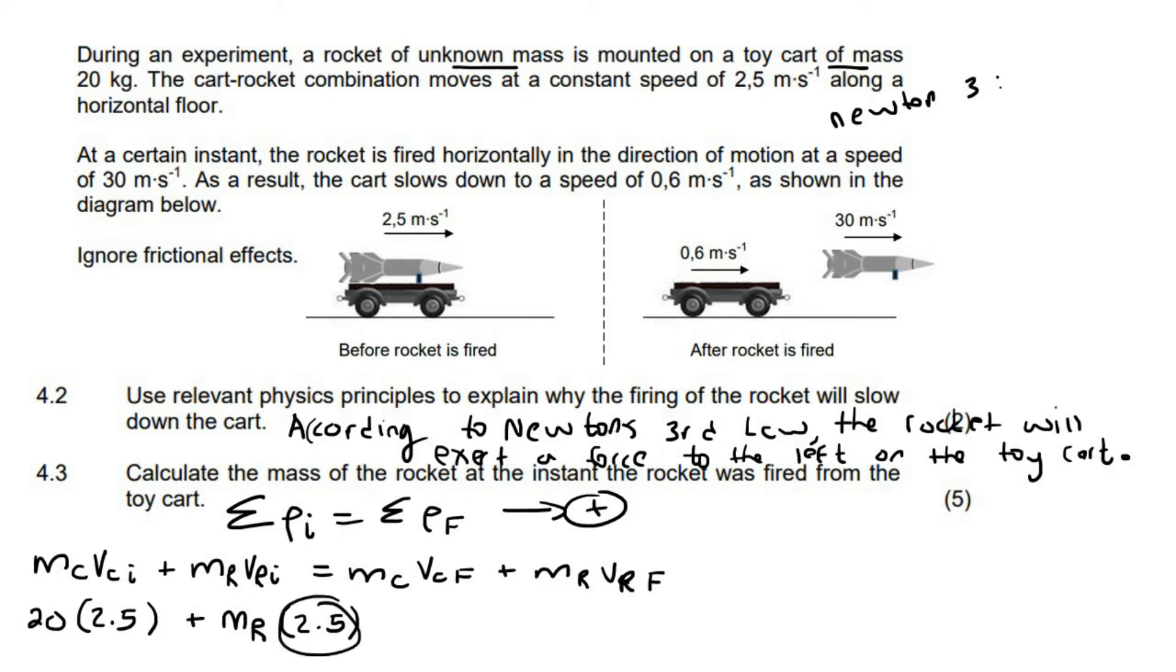You might have wanted to say zero because the rocket is not moving on the cart, but they're not talking about that velocity. They're talking about the velocity. If you were standing and watching this rocket going past on the cart, I know it looks like the rocket is not moving. It's not moving on the cart, but it's still moving relative to the ground. And it's that that they're talking about. They're talking about relative to the ground. So don't put a zero over there. Okay. Then, let's see the mass of the cart is still going to be 20. Its final velocity is 0.6. The mass of the rocket is the unknown and its final velocity is 30.